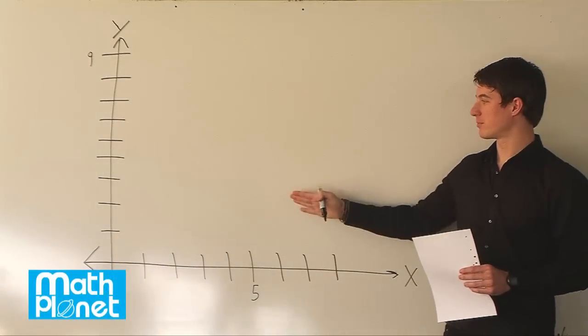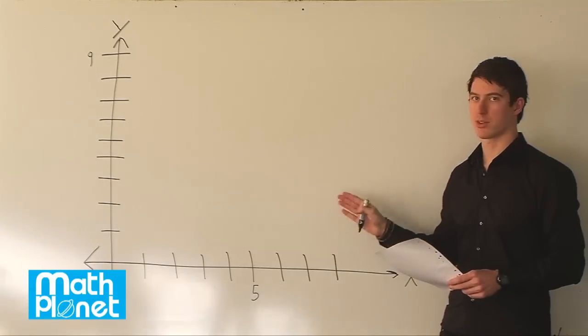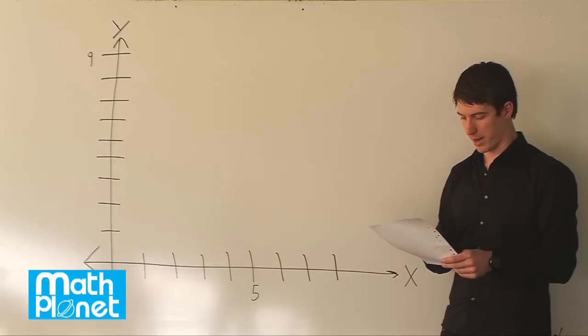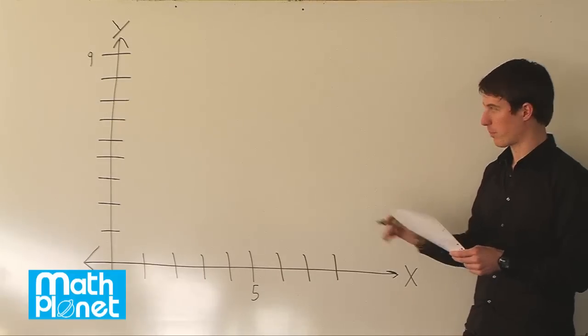Here we have a regular x, y coordinate, and we're trying to plot a certain number of ordered pairs here. We have one, two, three, four, five, six ordered pairs, and we want to plot them.